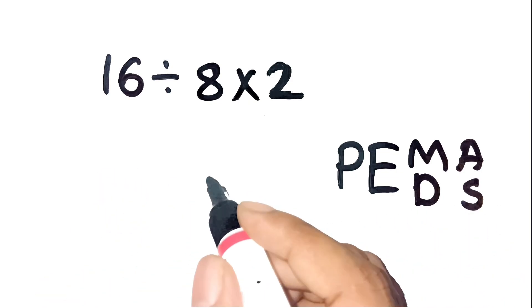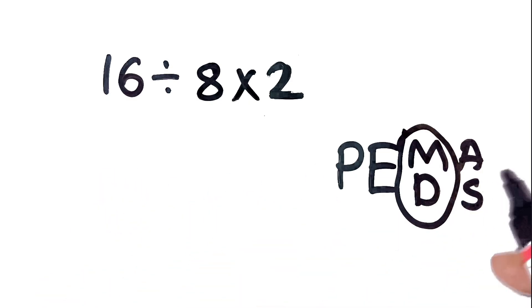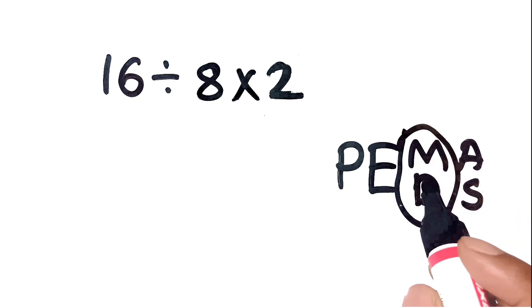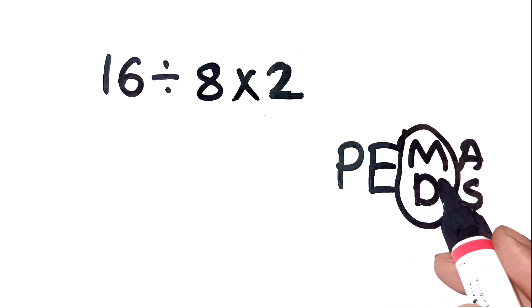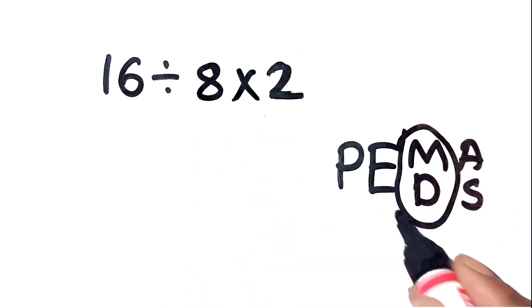But here's a key detail. Multiplication and division have the same priority. That means we don't just automatically do multiplication first. Instead, we solve them from left to right.